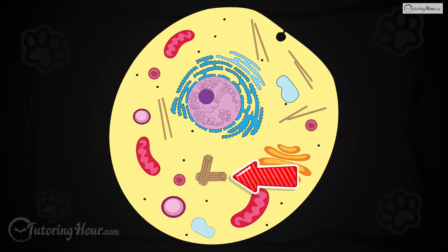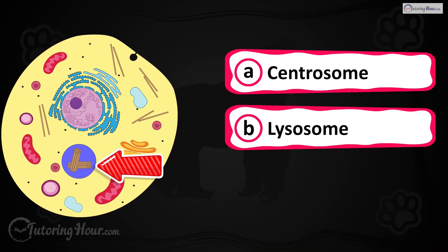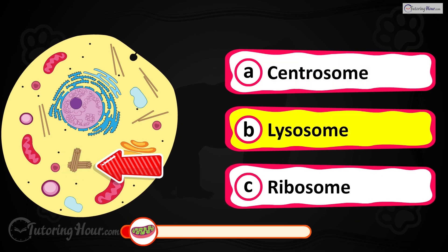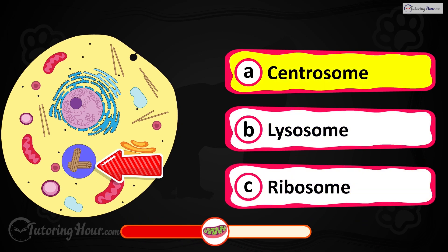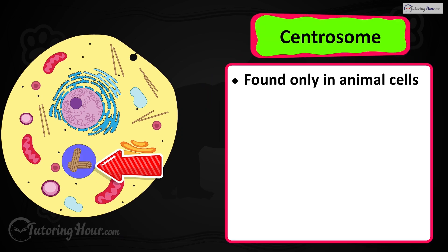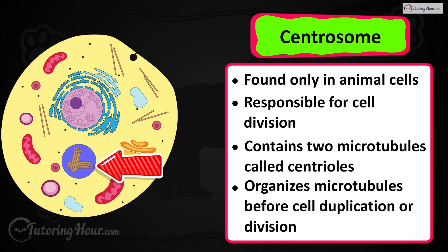Can you identify the highlighted part in the cell? Is it A) centrosome, B) lysosome, or C) ribosome? The correct answer is the centrosome. Found only in animal cells, it is responsible for cell division. It has two microtubule rings called centrioles. The centrosome organizes the microtubules into position before duplicating or dividing the cell.